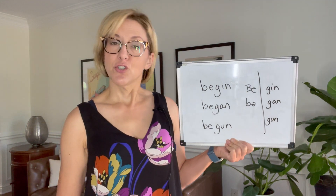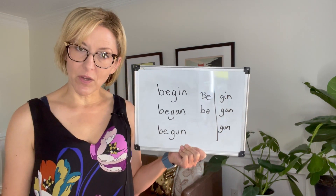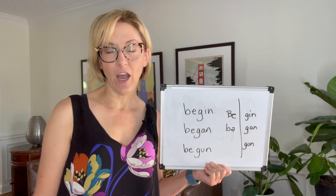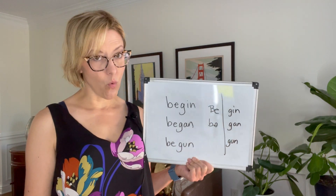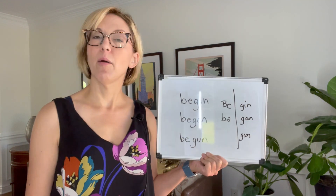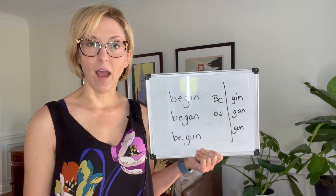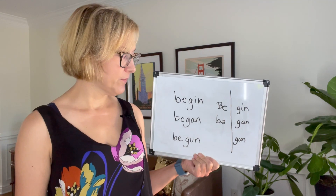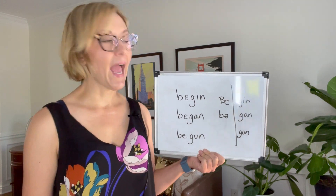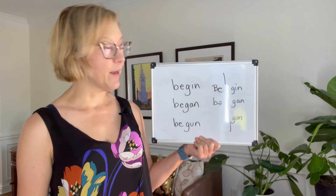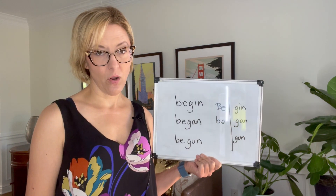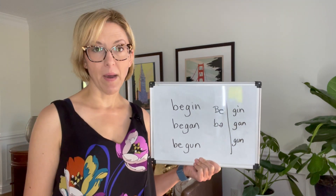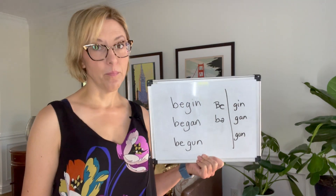You have a couple of choices for syllable number one. You can say 'be' with the long E, or you can say 'ba' with the short A. So you can say begin, began, begun — or ba-gin, ba-gan, ba-gun.